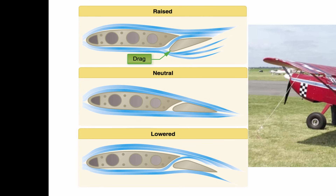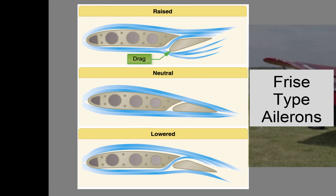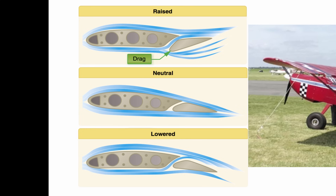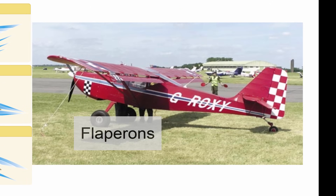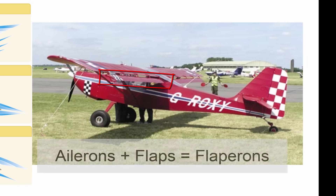The third system is called frise-type ailerons, pictured on the left. These ailerons move on an offset pivot, which causes them to be pushed into the airstream when deflected upward, creating drag. These ailerons also have slots which allow for smoother airflow over the lowered aileron, making it more effective at high angles of attack. The fourth system is called flapperons, pictured on the right. Flapperons combine the aspects of the ailerons and the flaps. The pilot can move the flapperons like conventional ailerons, or lower both simultaneously like flaps.